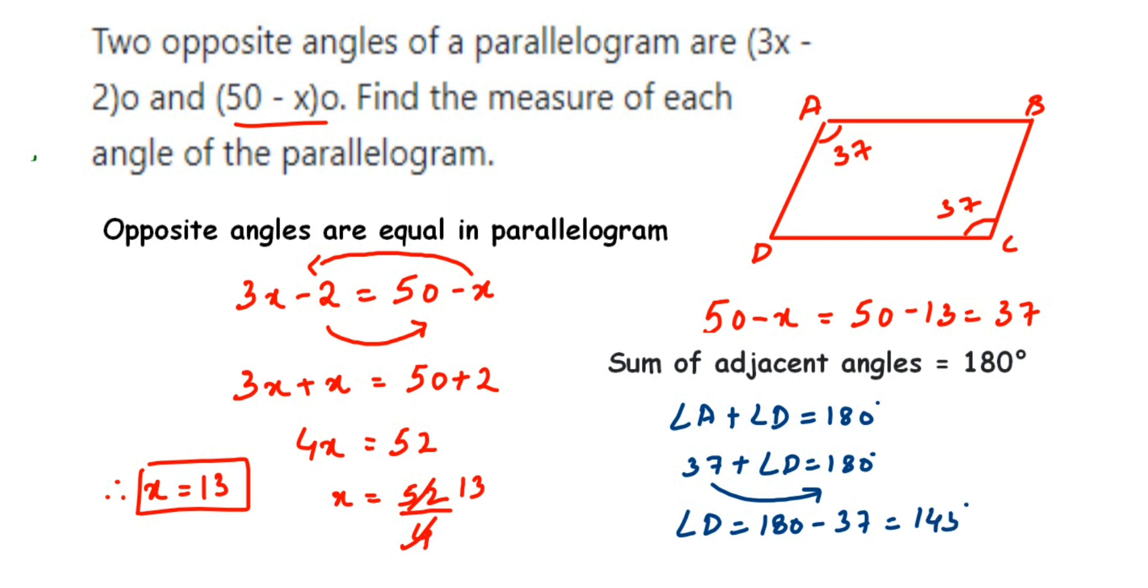We know that angle D and angle B are equal because opposite angles are equal in a parallelogram, so angle B will also become 143°.